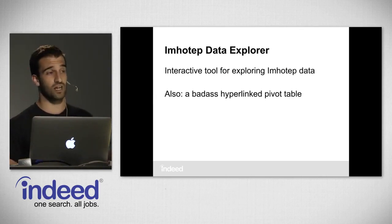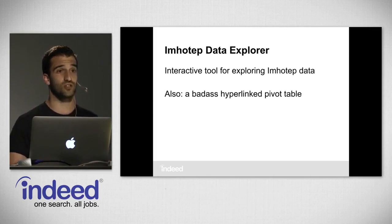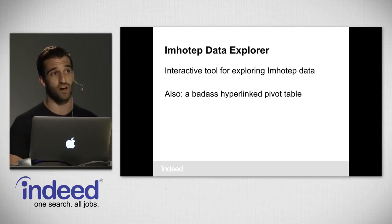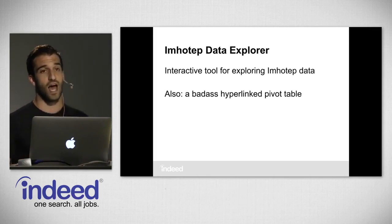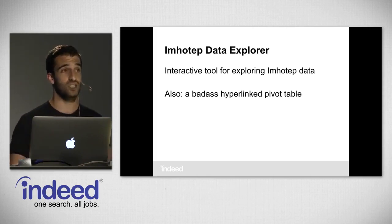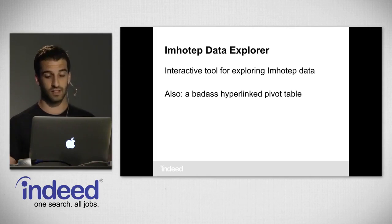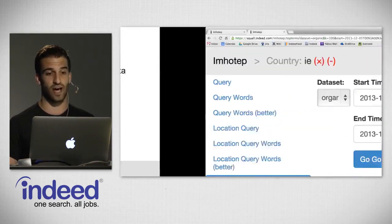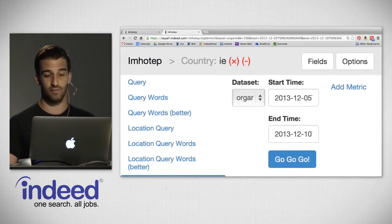We're going to look at this data inside what's called Imhotep Data Explorer. You can think of Imhotep Data Explorer as an interactive tool for exploring Imhotep data — or just a badass hyperlinked pivot table. The hyperlinks are on the fields and on the values. When you click on a hyperlink on a field, it does an interactive group-by or pivot on that field. When you click on a value, it does a filter. Let's go ahead and dive into Imhotep.